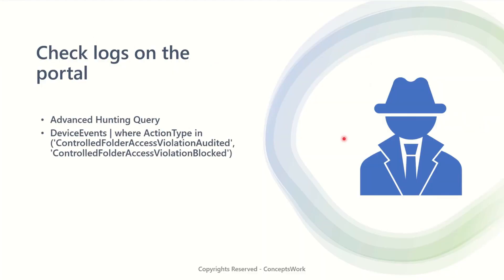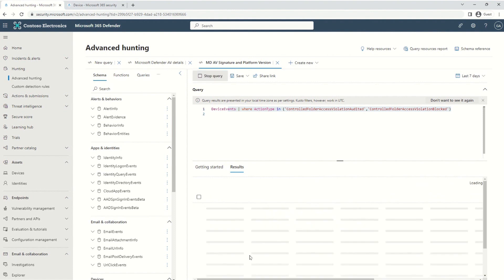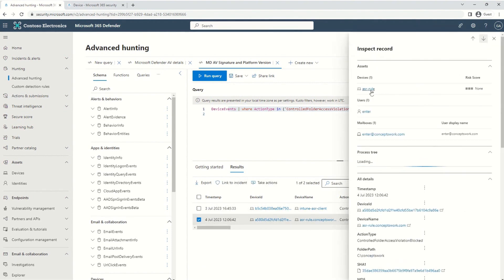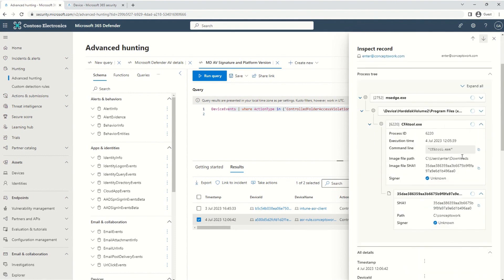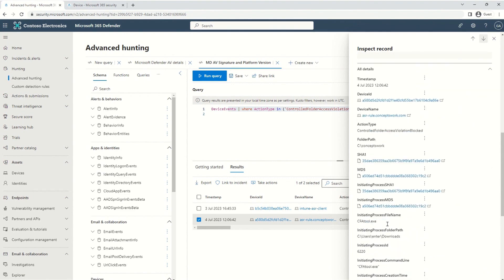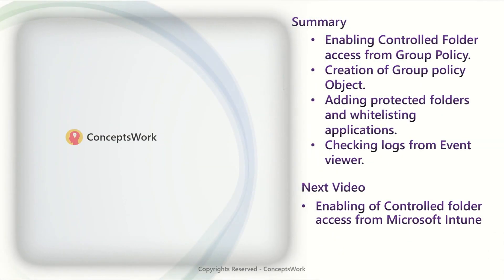The next step is to check the logs on the MDE portal in the Advanced Hunting query section. I'm logged into security.microsoft.com and the query I've written is: DeviceEvents where ActionType is ControlledFolderAccessViolationAudited or Blocked. The second entry corresponds to our use case — the device is ASR-rule, the user was Enter, the command line tool CFA tool was blocked as it tried to create a file in the concepts work folder, which is a protected folder. The same information is also available in the Device Timeline. Note that alerts are not generated for controlled folder access events, so you may need to write a custom alert rule, which I've shown in my CFA video.